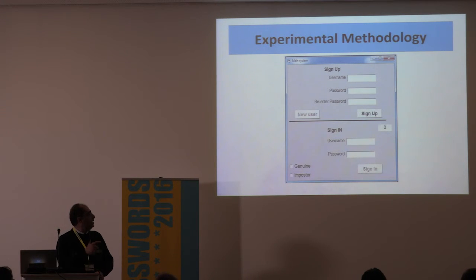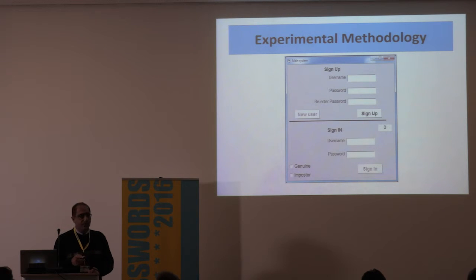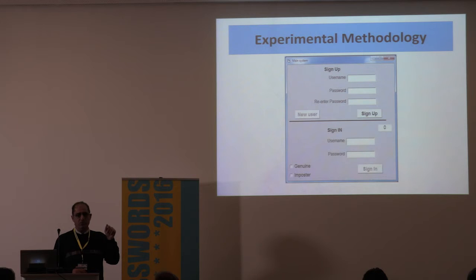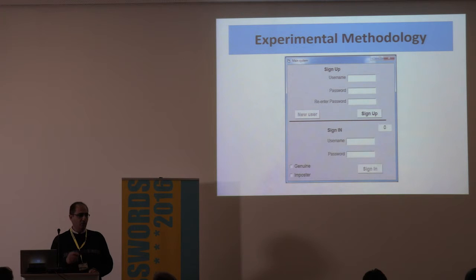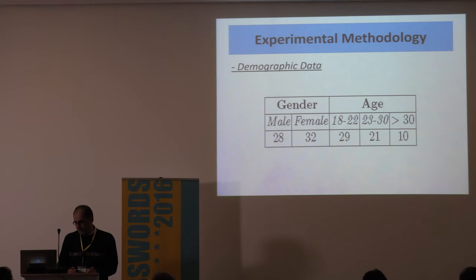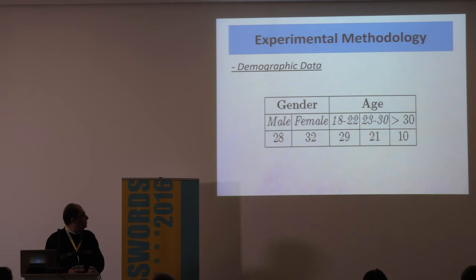During sign-up, genuine users selected a username and password, then retyped it. We matched the rhythm of the first and second entries; a match was considered a successful sign-up. The genuine user then entered the sign-in phase and tried to sign in three times. Imposter users were each given the real username and password and asked to access the system, typing the password three times. Demographically, we had 28 males and 32 females; 29 students aged 18–22, 21 aged 23–30, and 10 over 30.